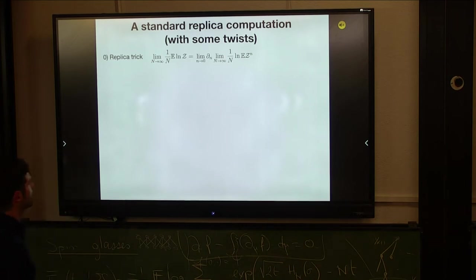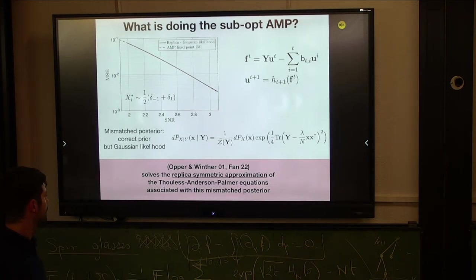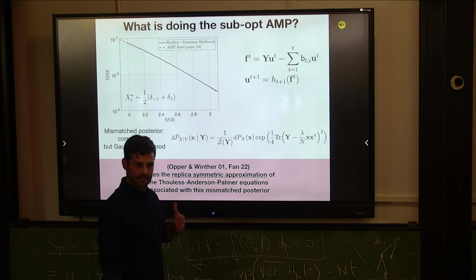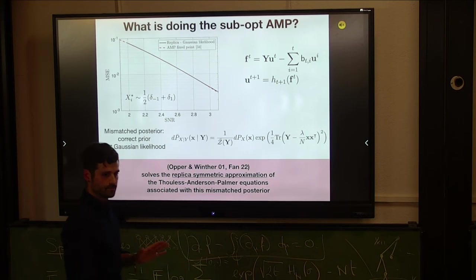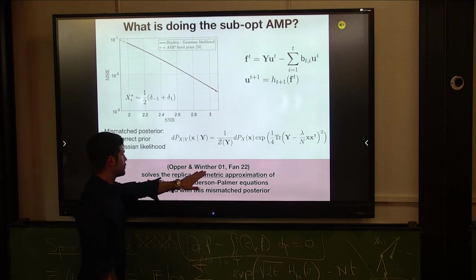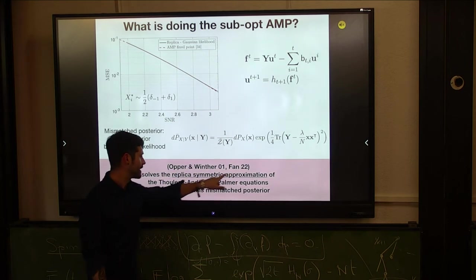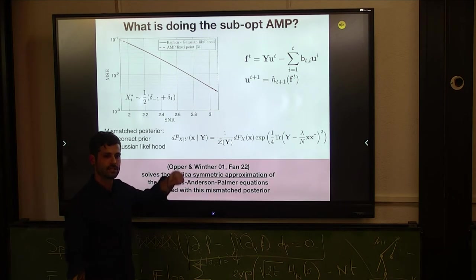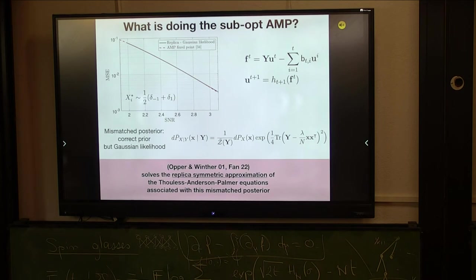Essentially what we show is that this suboptimal AMP solves the kind of replica symmetric approximation to the TAP equations associated with this mismatched posterior. Maybe just a question: Did Hopper and Winter or Zoufan ever claim that this will actually be optimal, or isn't it just like a... It's not said explicitly, but it's strongly suggested in that paper. It's not claimed though. Hopper and Winter probably not. Hopper and Winter really studied this kind of problems without planted part, not the actual signal, not the inference setting. But this algorithm is directly borrowed from that, introducing the planted part.